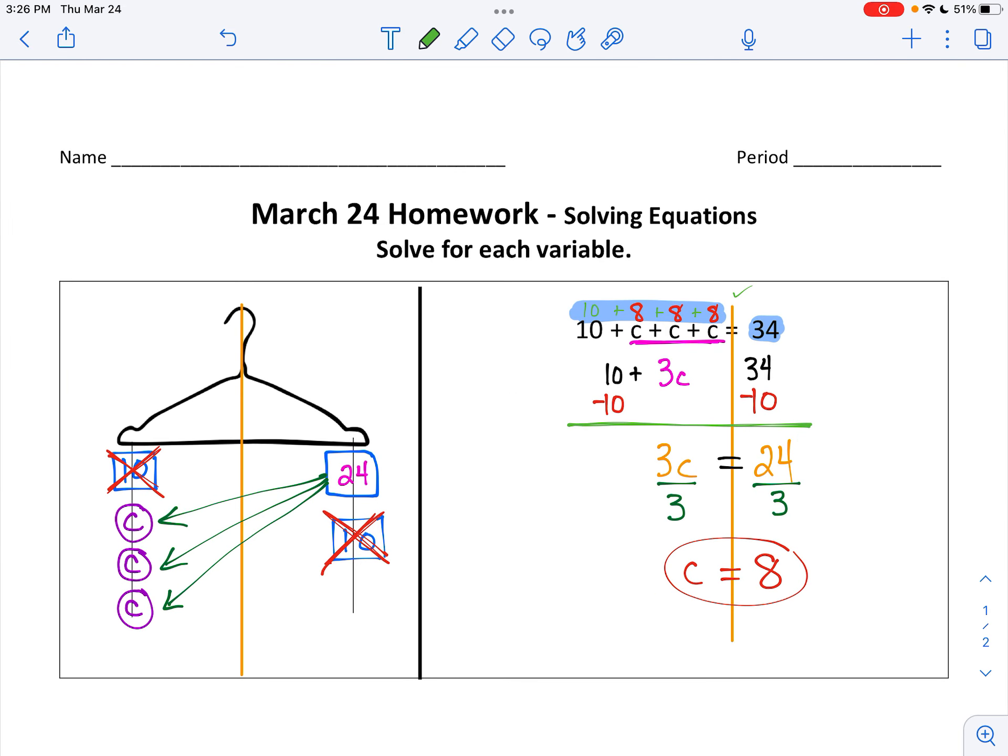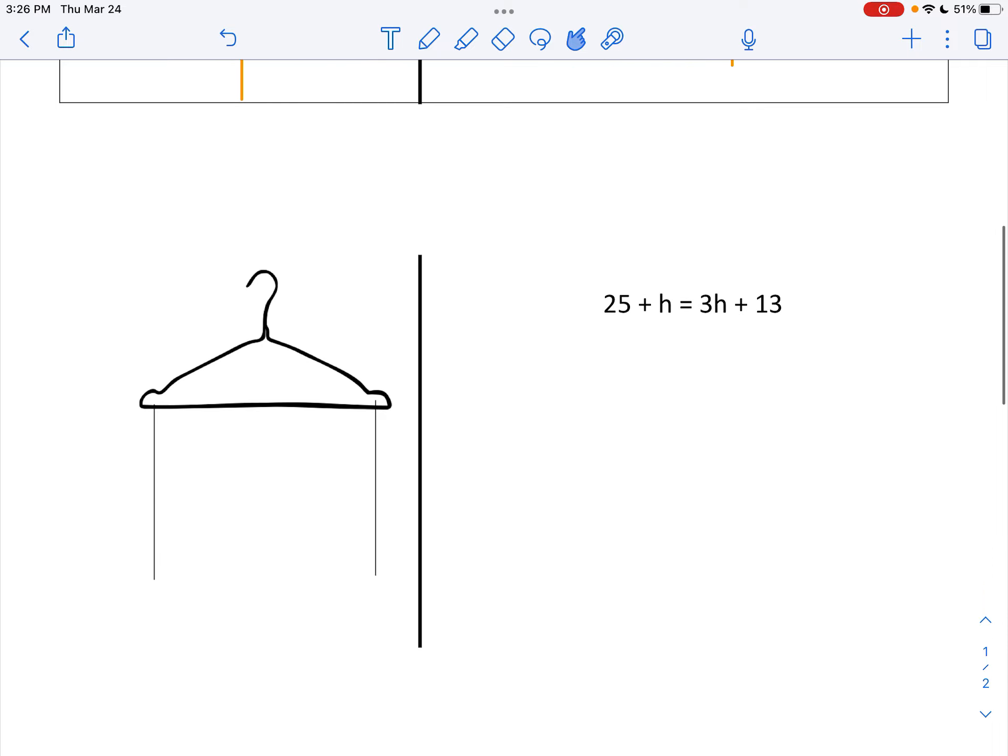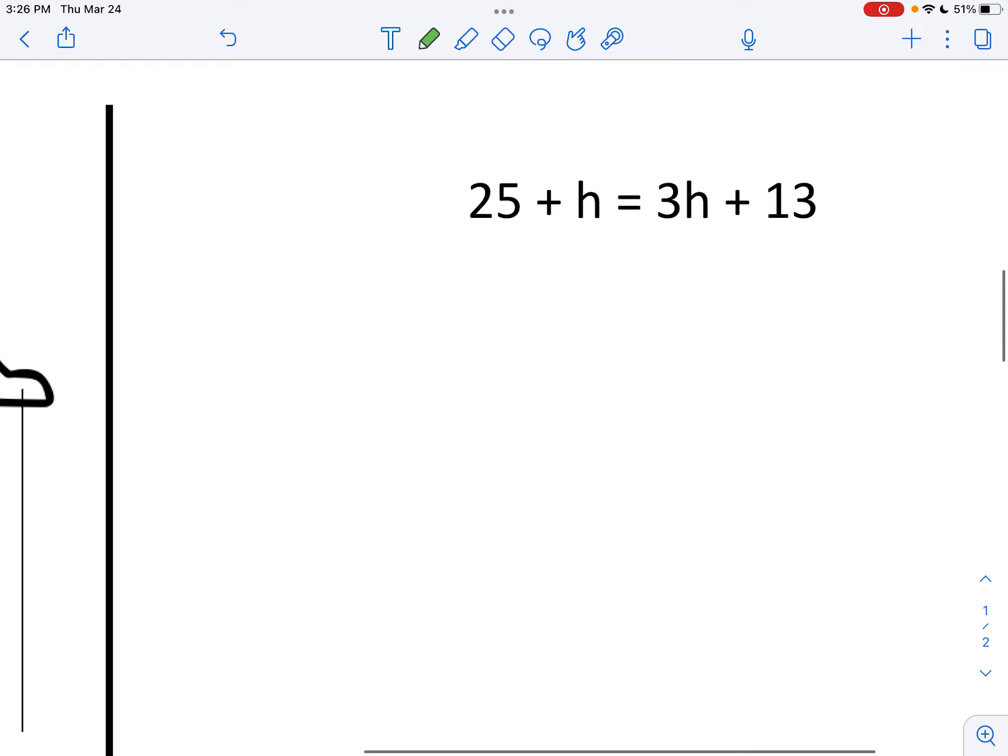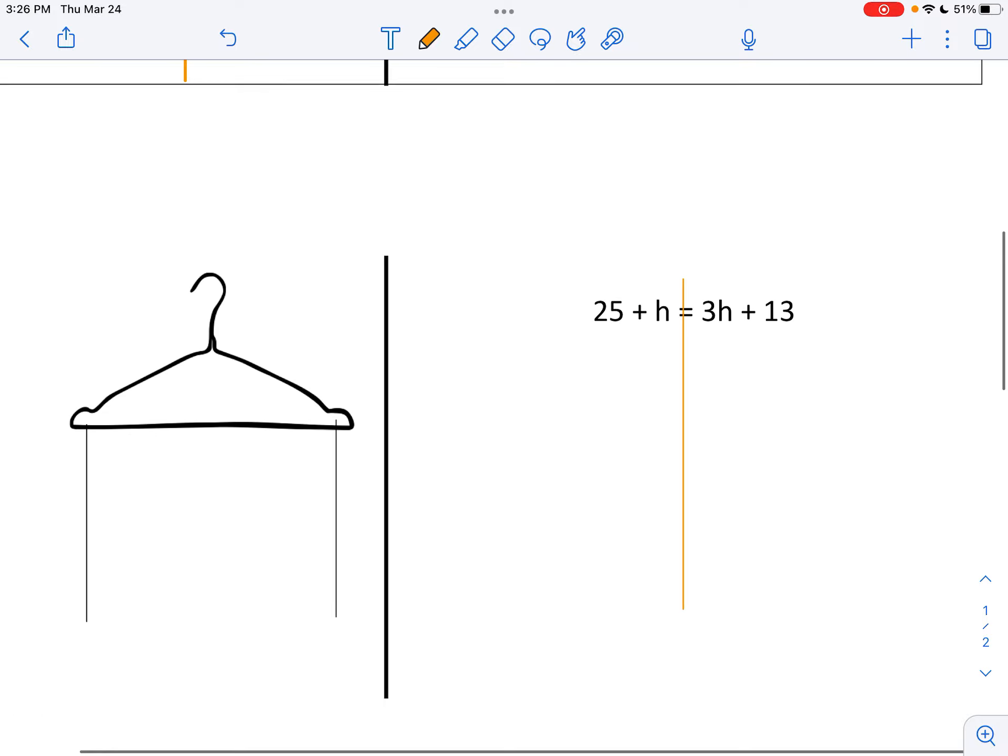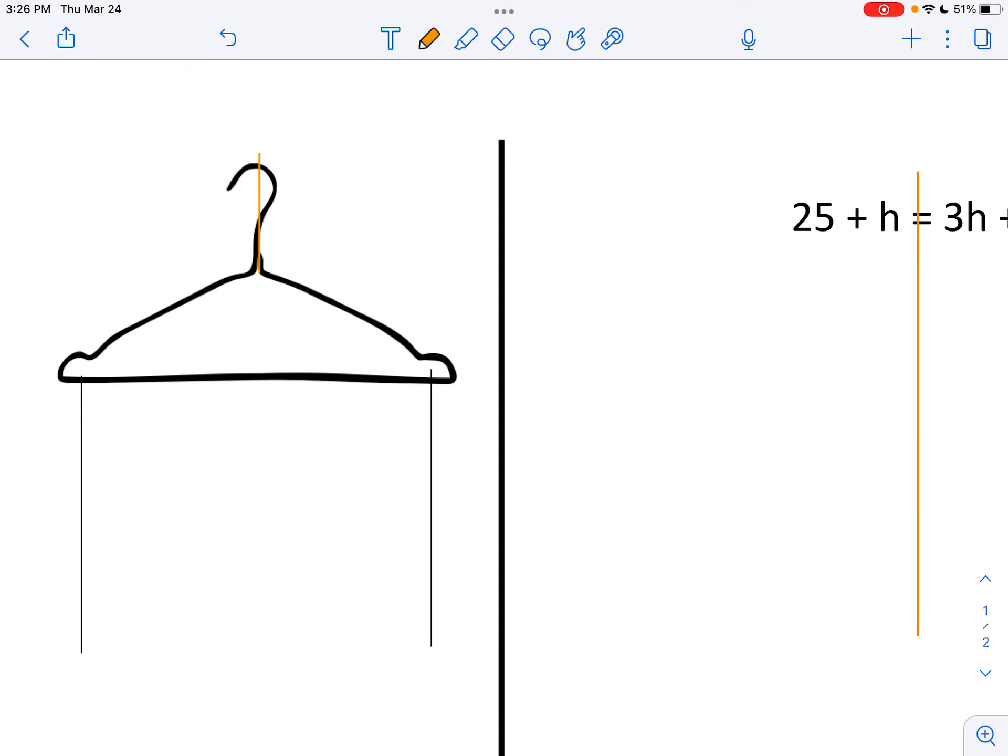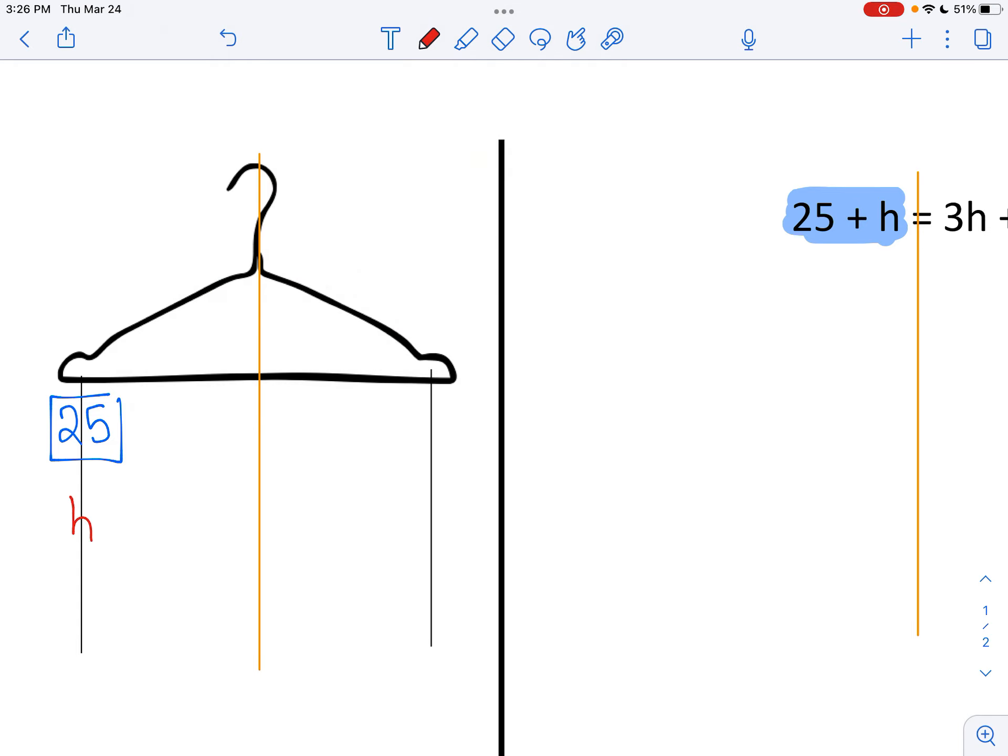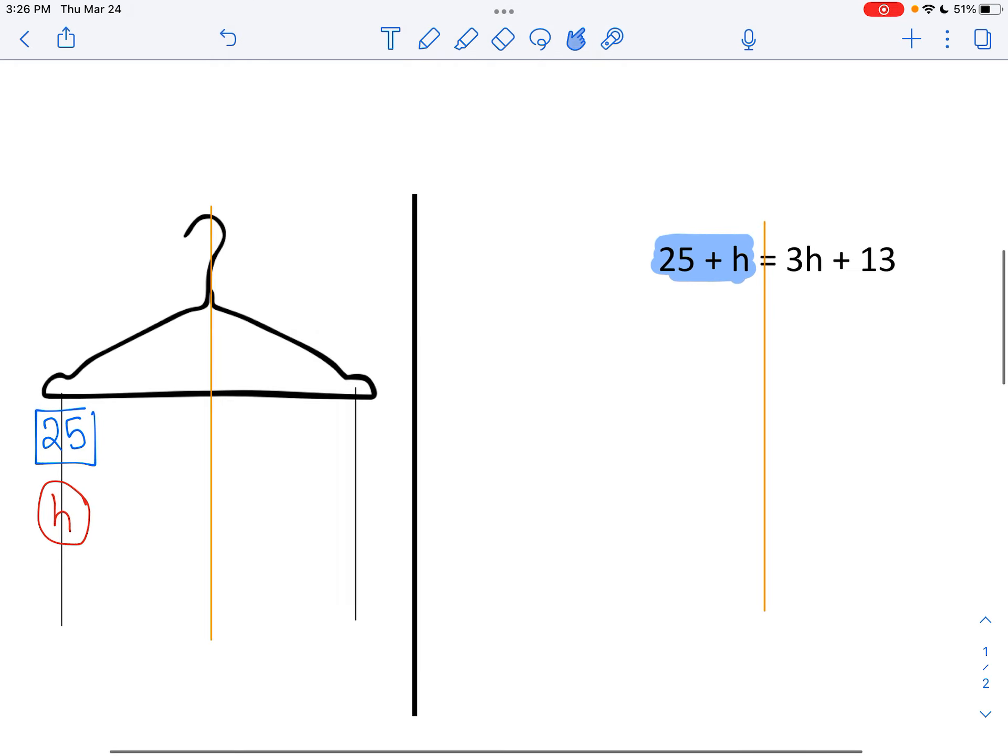Okay, the second question, the second problem is just a little bit trickier because it has H's on both sides. So I'm going to help you get it set up and then I want you to try to solve it. So I'm going to make a line right through the middle, and I'm going to make a line right through the middle. And this time on the left side, I see 25 and an H. So I'm going to write 25, box, H, circle.